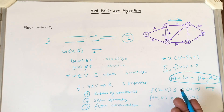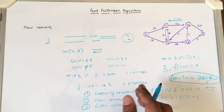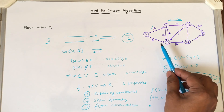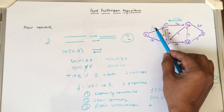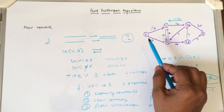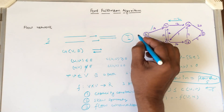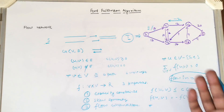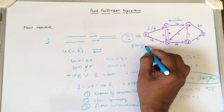In flow networks, we represent flow using slash notation. The network edges show capacity initially. If a source vertex embeds some flow — for example, a flow of 11 in one direction — it is represented as flow/capacity on that edge. So the flow network is generally presented as F(u,v) / C(u,v).